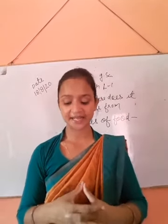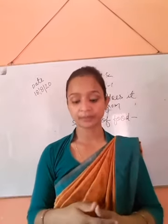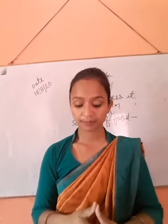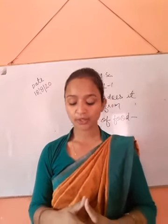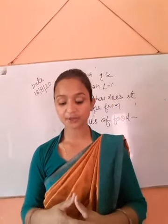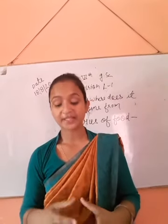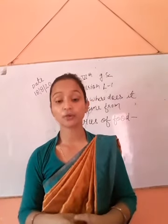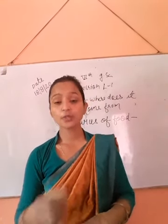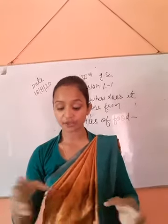Common vegetables and parts used: carrot and radish — roots; sweet potato — roots; potato and onion — stems; cabbage, spinach — leaves; methi — stem and leaf; tomato — fruits. Fruits have high water content and low food value but are rich in minerals and vitamins.